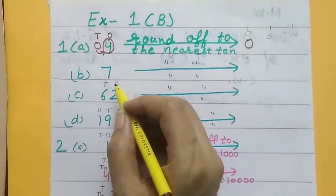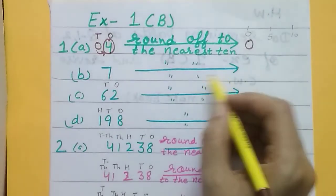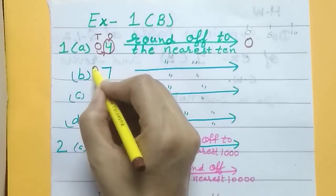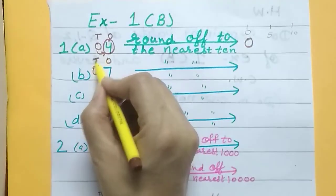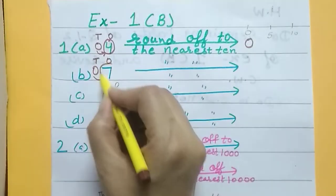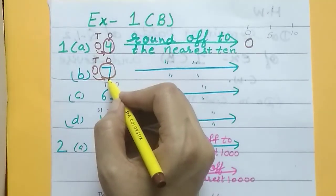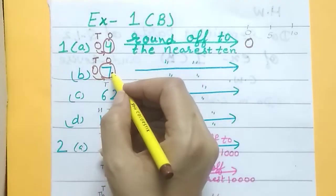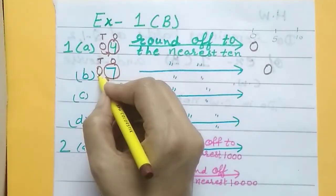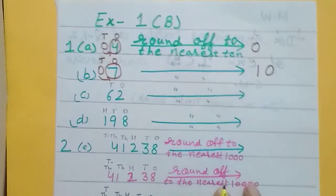Part b: round off to the nearest ten. Write ones and tens places. Just right of the tens, circle the digit — it is more than five, so it will change into zero. And zero will become one, so our answer will be ten.